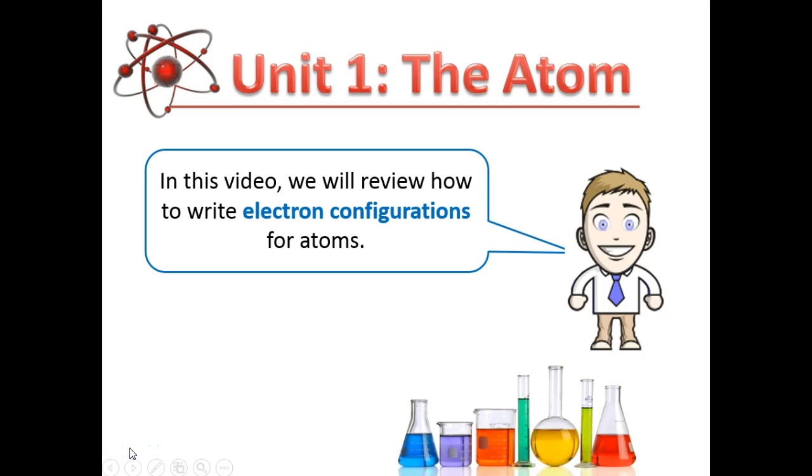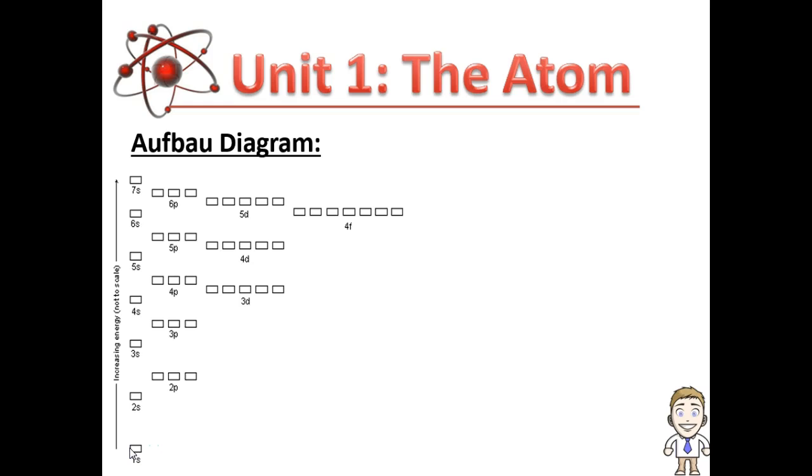Hi everybody and welcome to another Unit 1 video, this time on electron configurations. The main tool of writing an atom's electron configuration is this chart on the left known as an Aufbau diagram.